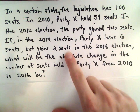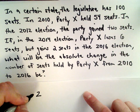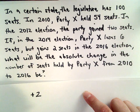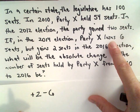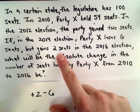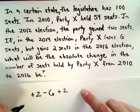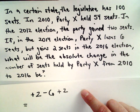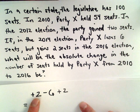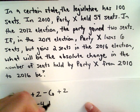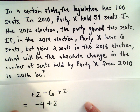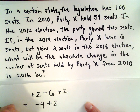They gain two seats, so that's positive two seats they win. They go on to lose six seats, but then they gain another two seats. So if we simplify this: positive two minus six is going to be negative four, plus two. Negative four plus two gives us negative two.